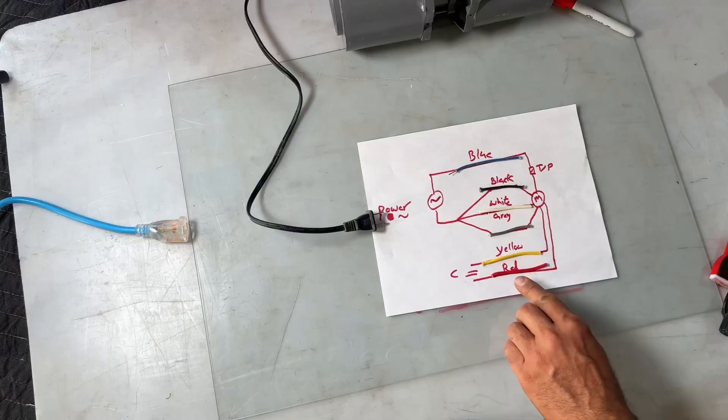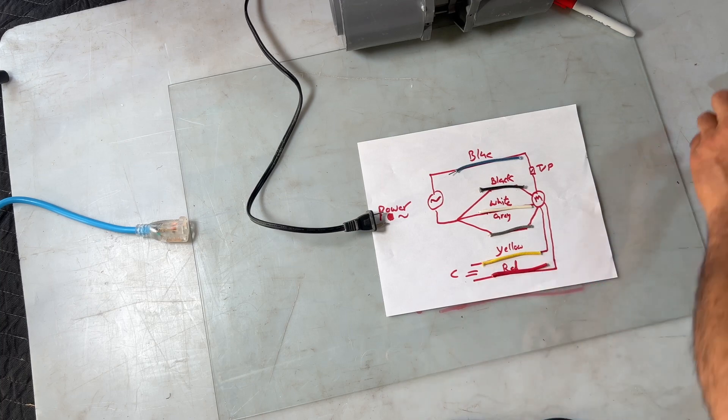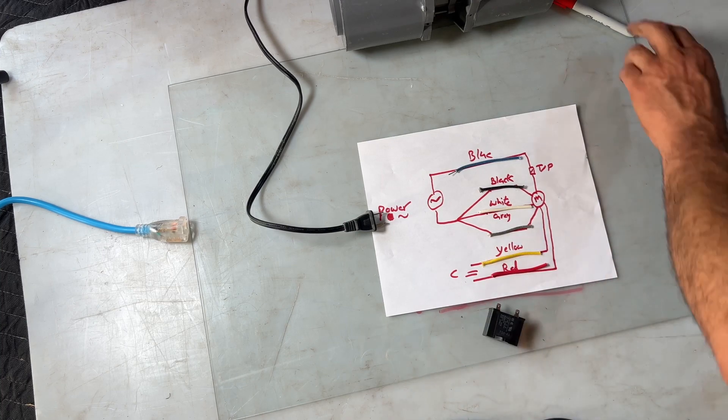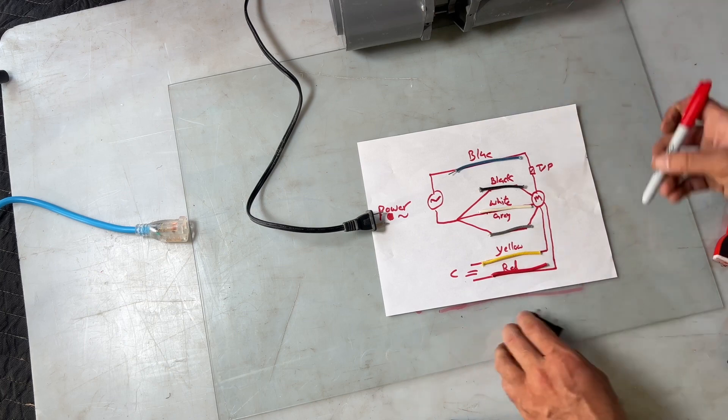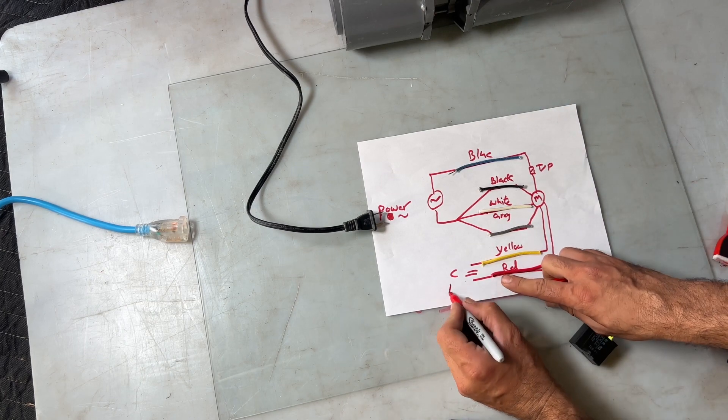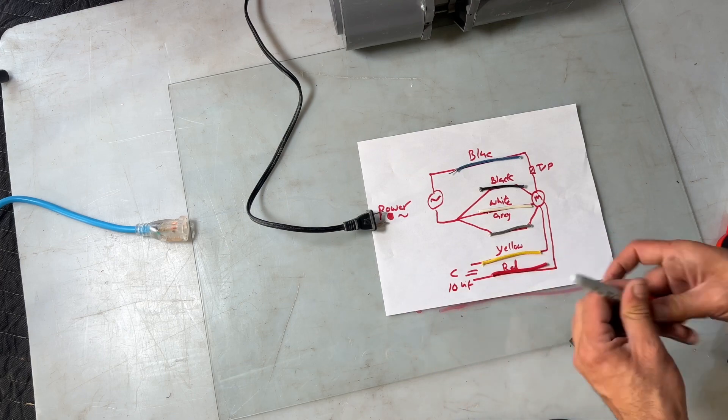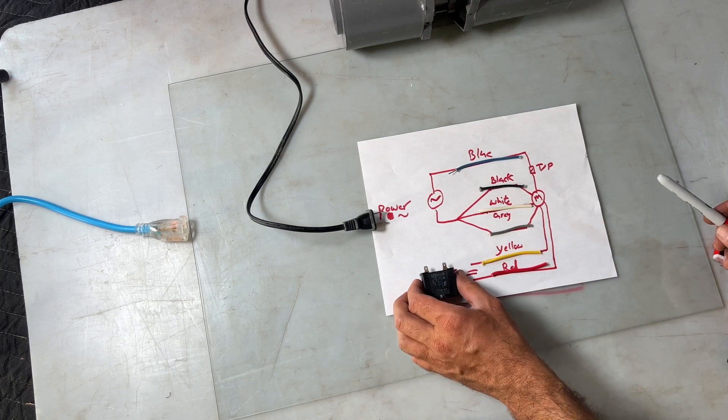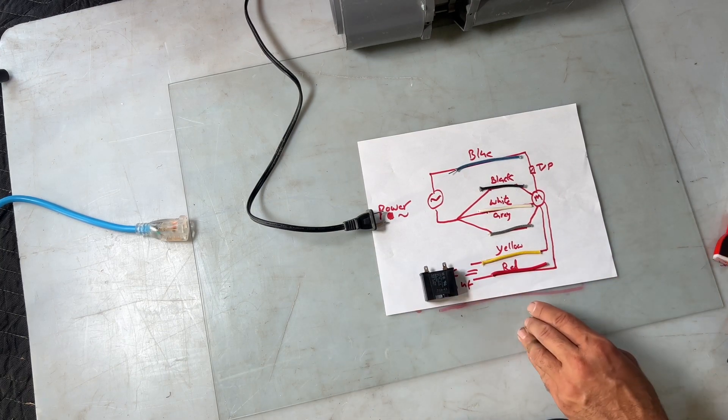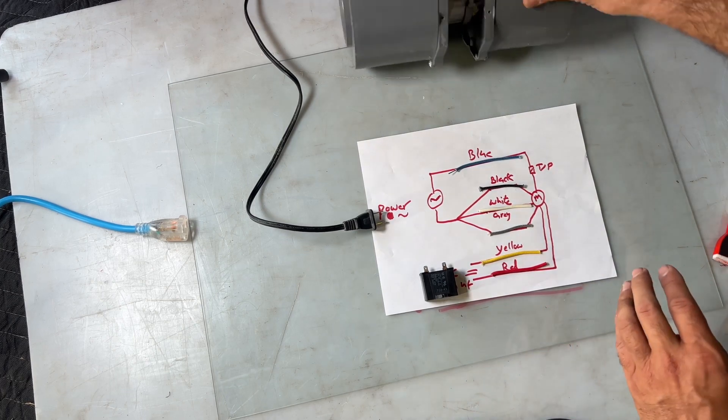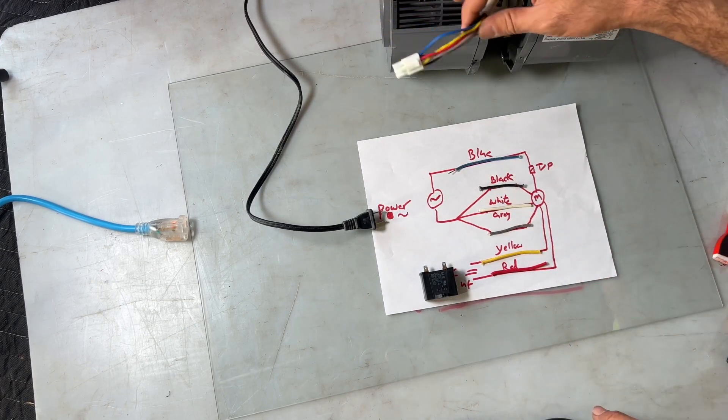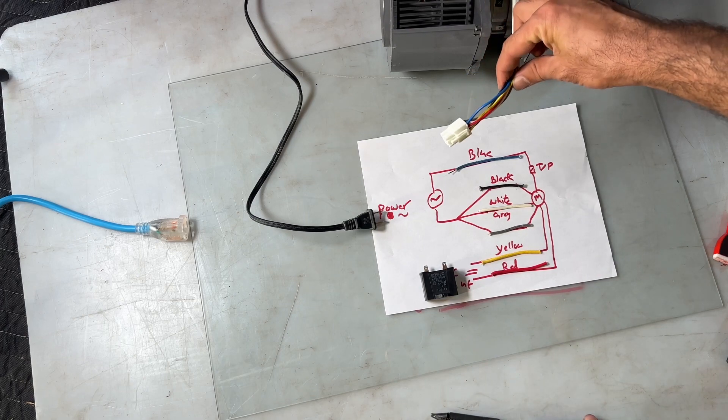Yellow and red is these two which goes to the capacitor, 10 microfarad capacitor. So here's the capacitor the way it goes. So what we are going to do is I will have to cut this connector from here from the motor.